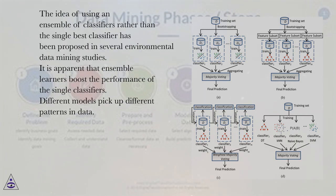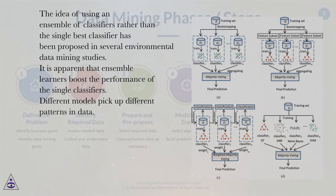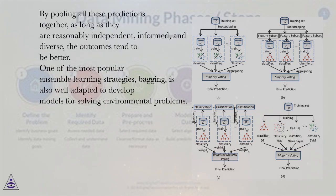The idea of using an ensemble of classifiers rather than the single best classifier has been proposed in several environmental data mining studies. It is apparent that ensemble learners boost the performance of single classifiers. Different models pick up different patterns in data, and by pooling all these predictions together — as long as they are reasonably independent, informed, and diverse — the outcomes tend to be better.